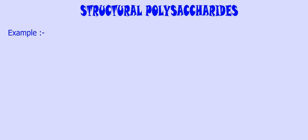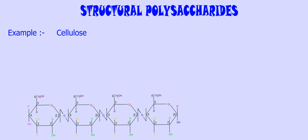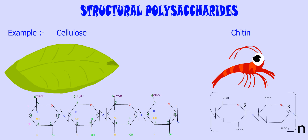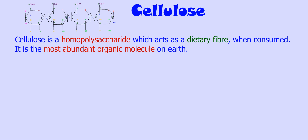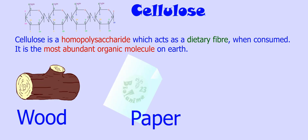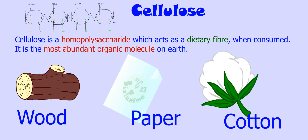Structural polysaccharides — an example is cellulose, which is found in the cell walls of plants. Another structural polysaccharide is chitin. Cellulose is a homopolysaccharide which acts as a dietary fiber when consumed. Cellulose is said to be the most abundant organic molecule on earth. Wood, paper, and cotton are common forms of cellulose.